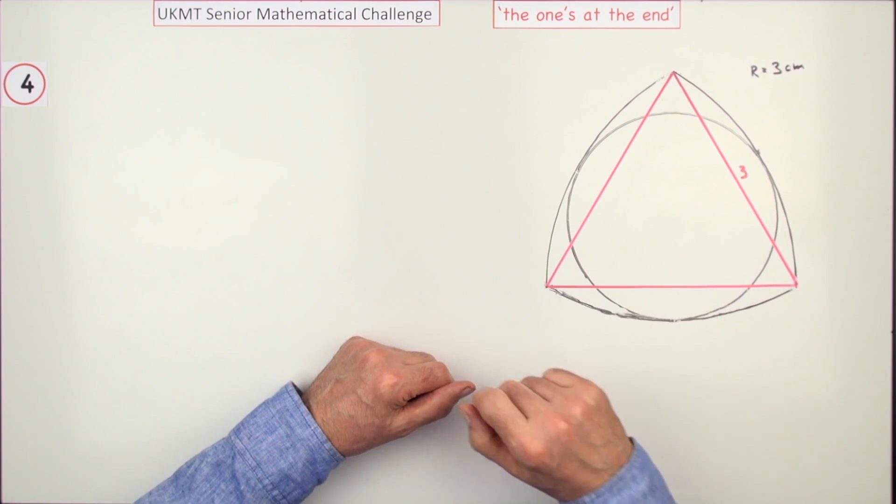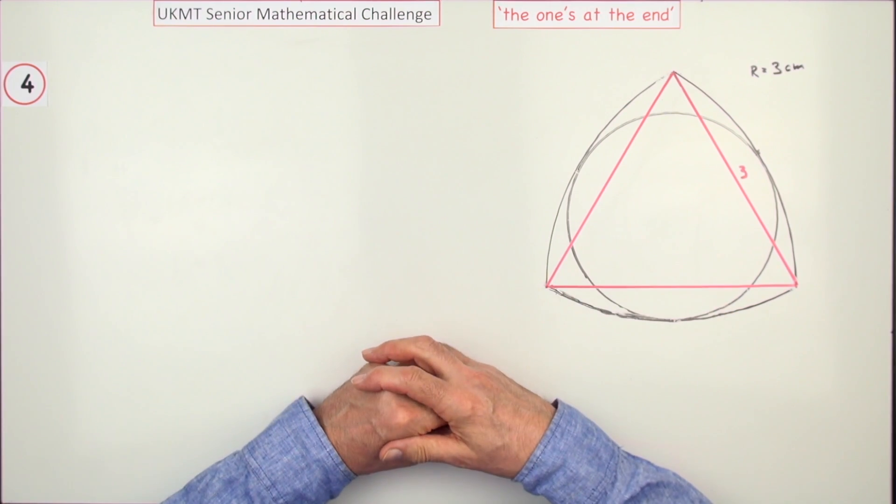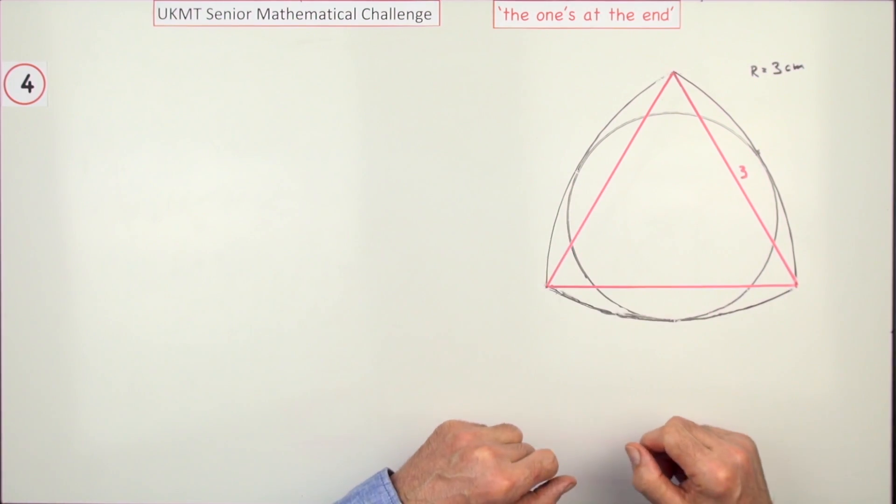Instead of knowing that the centroid of a triangle is the intersection of its medians and it lies a third of the way up the median, you could just have looked at this figure and carried on with the obvious symmetry that's there.